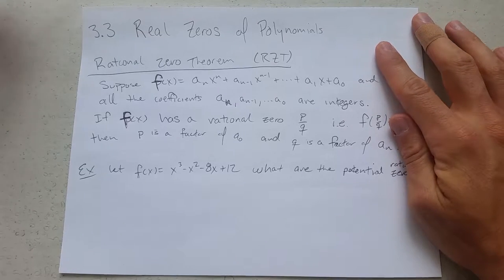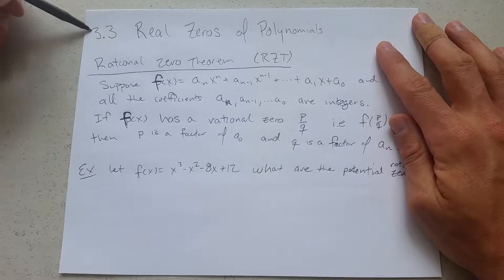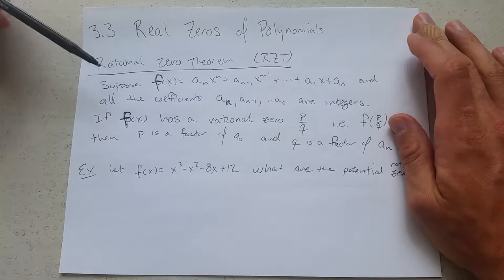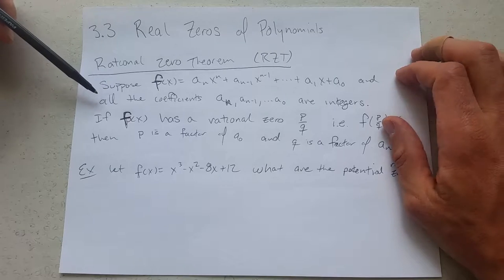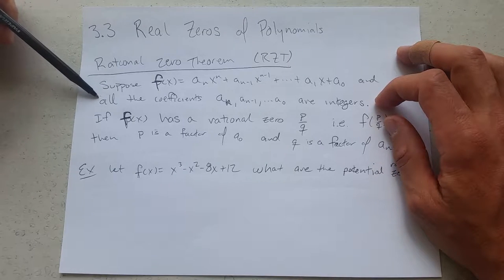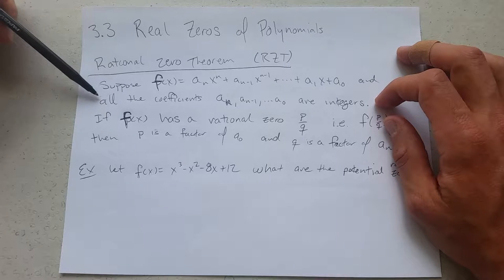Real zeros of polynomials. This is section 3.3. We're going to start with the rational zero theorem. We have a polynomial and if all the coefficients are integers - this is important, if they're not all integers the theorem won't work - so they all need to be integers, whole numbers.